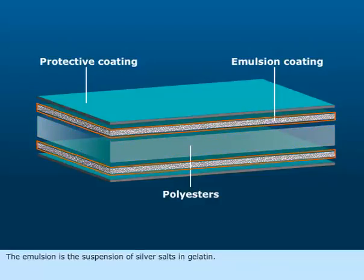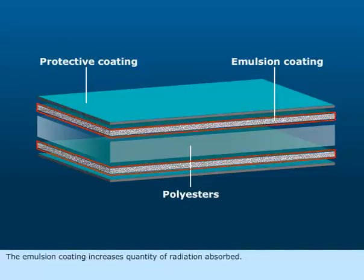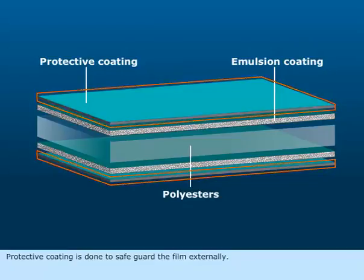The emulsion is the suspension of silver salts in gelatin. The emulsion coating increases quantity of radiation absorbed. Protective coating is done to safeguard the film externally.